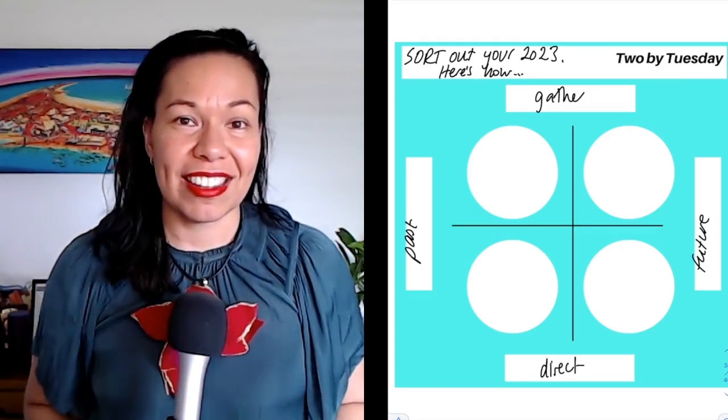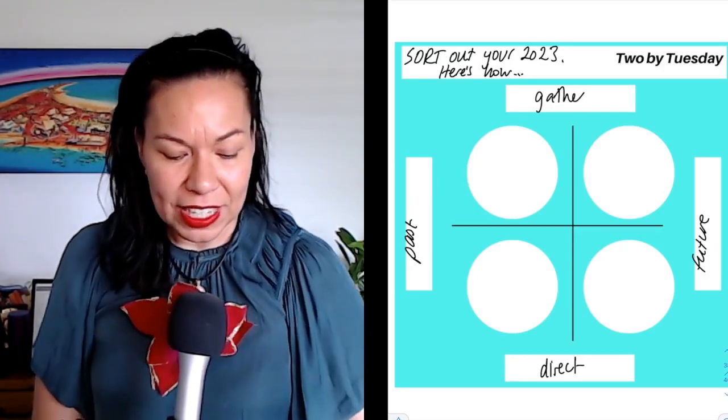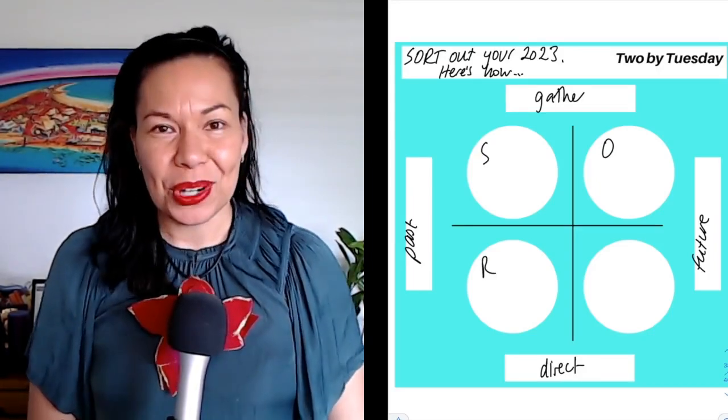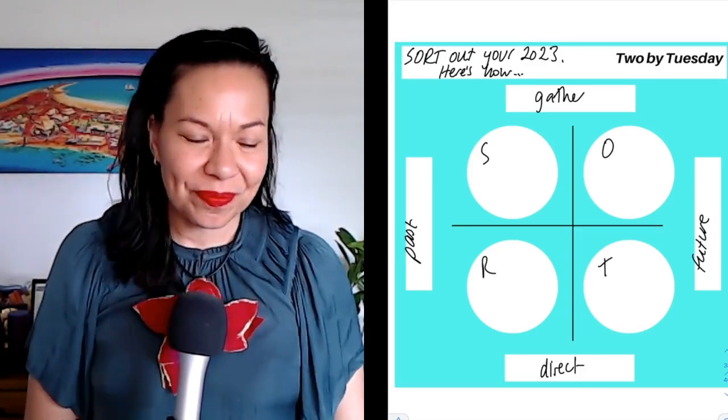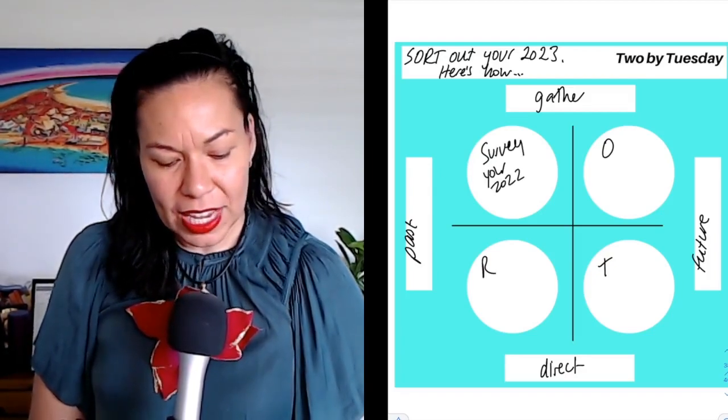The acronym is SORT. So at the top left is a letter S, top right O, bottom left R, and bottom right T. Top left is survey the past year, survey your 2022.